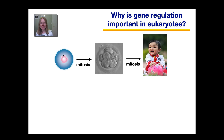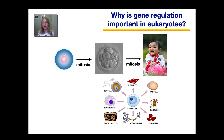The single fertilized egg went through many many rounds of mitosis, which replicates cells exactly. So all of the cells in the multicellular organism have identical DNA sequences. And so how is it that they become this incredible variety of cells? I find this area of biology the most fascinating.